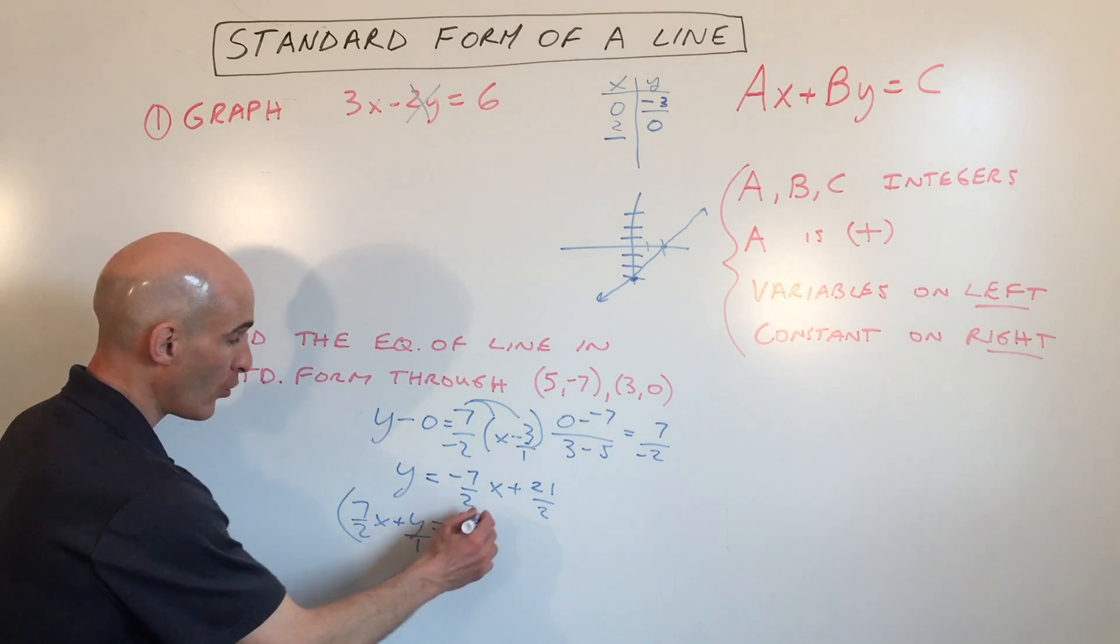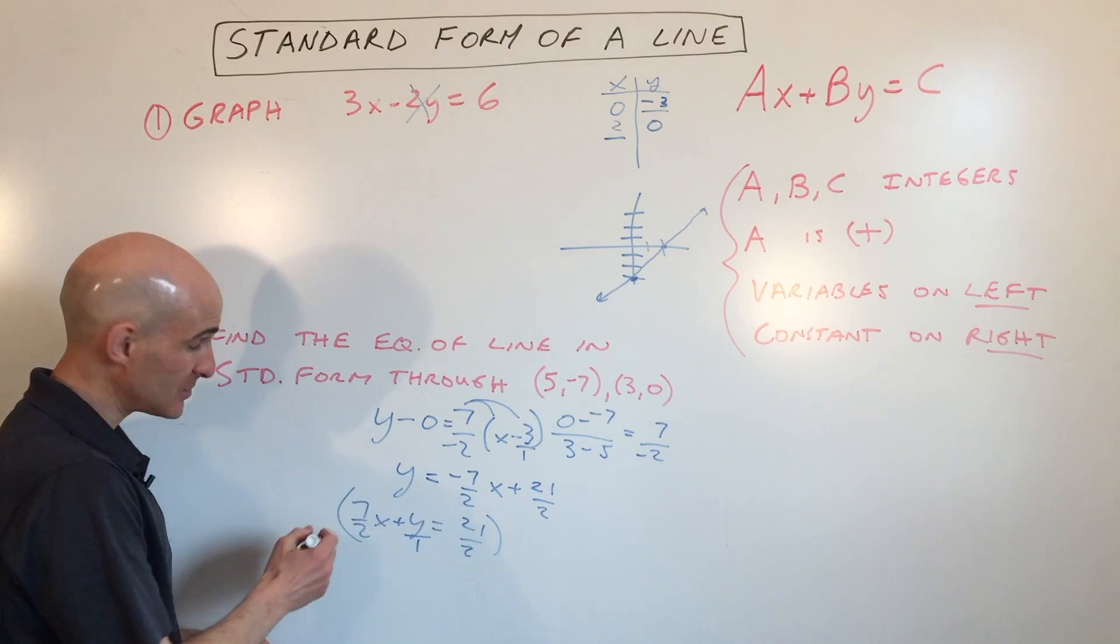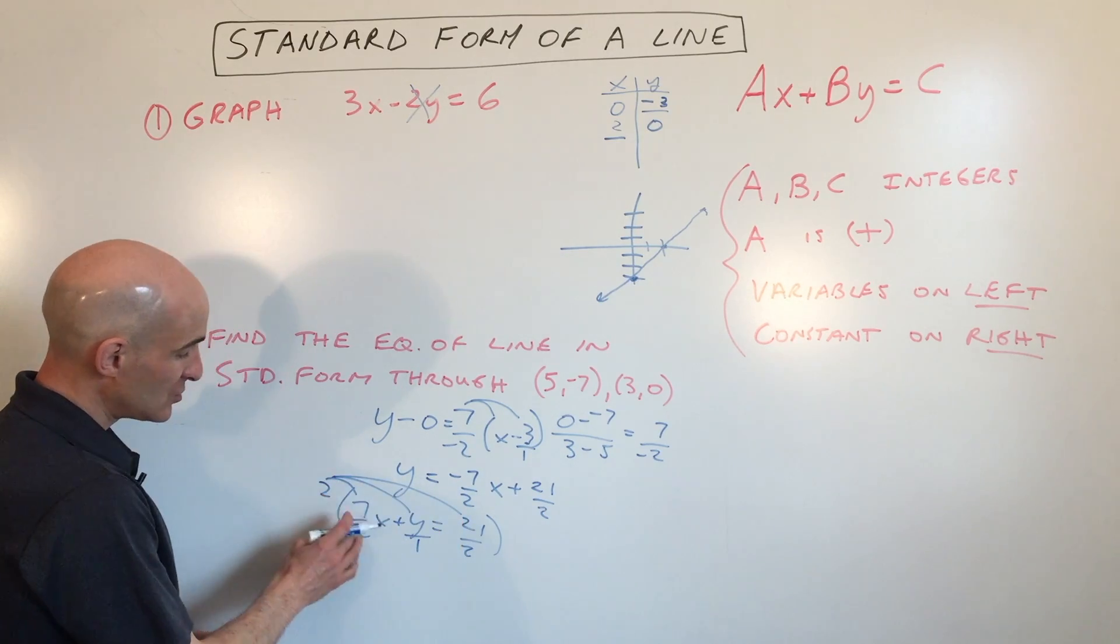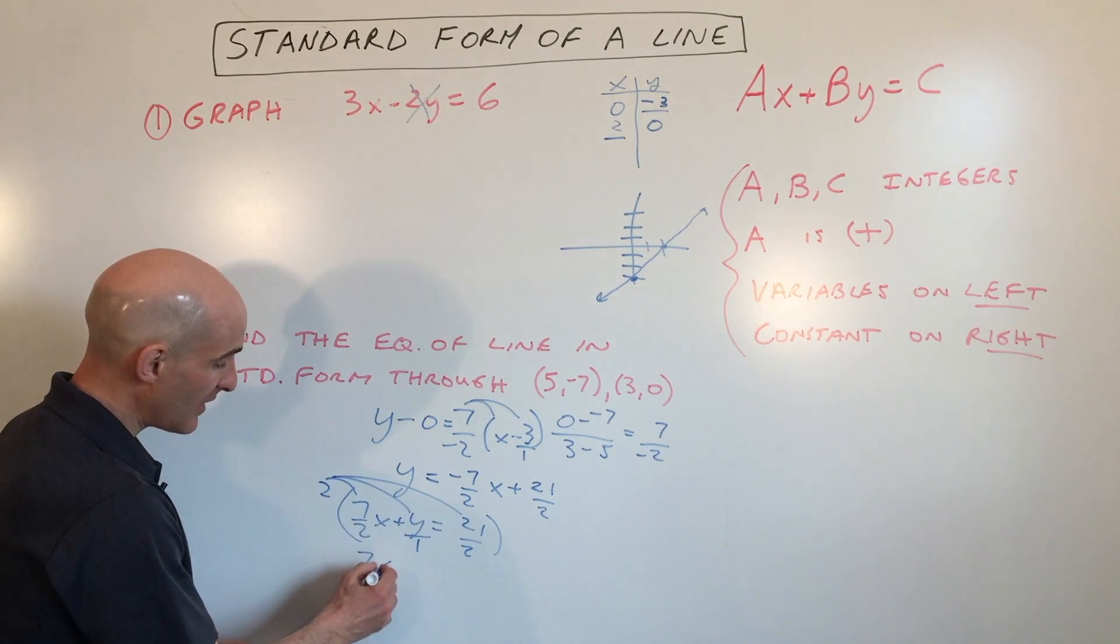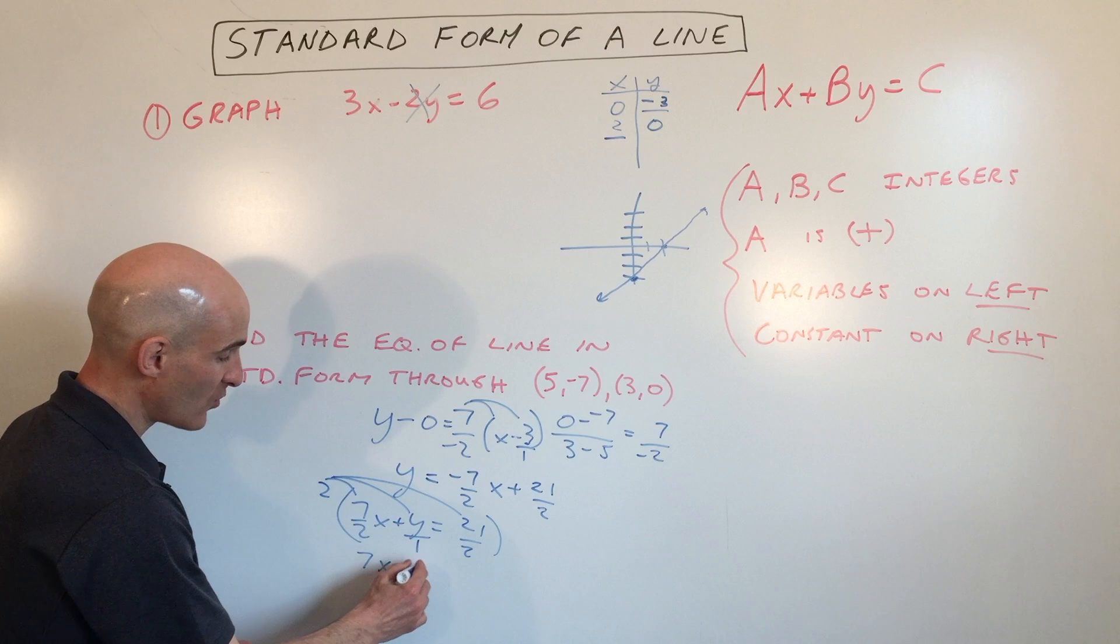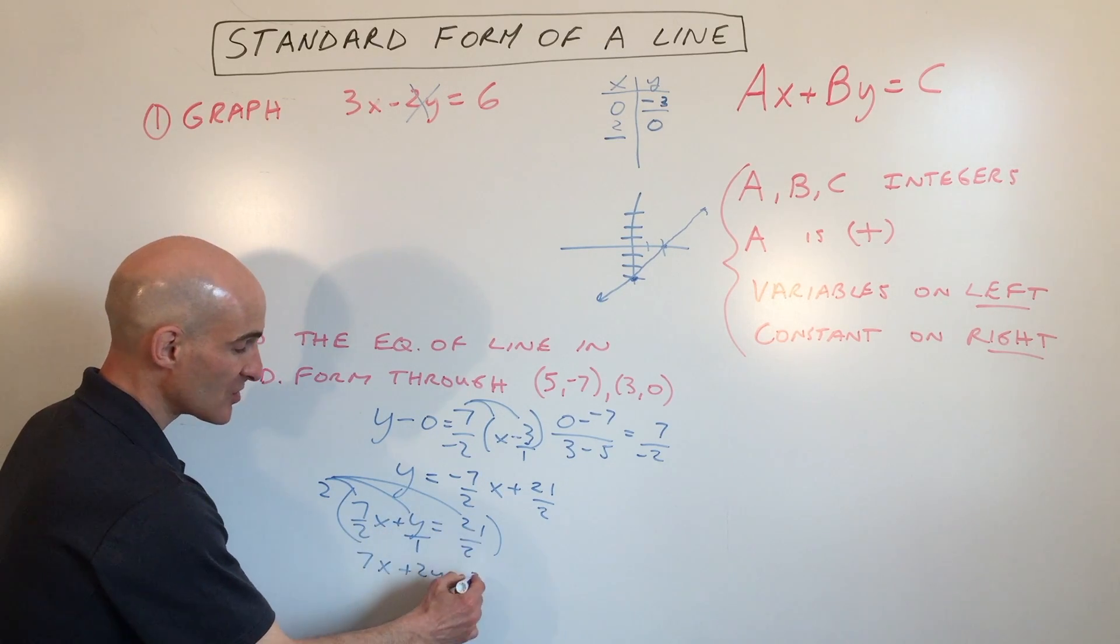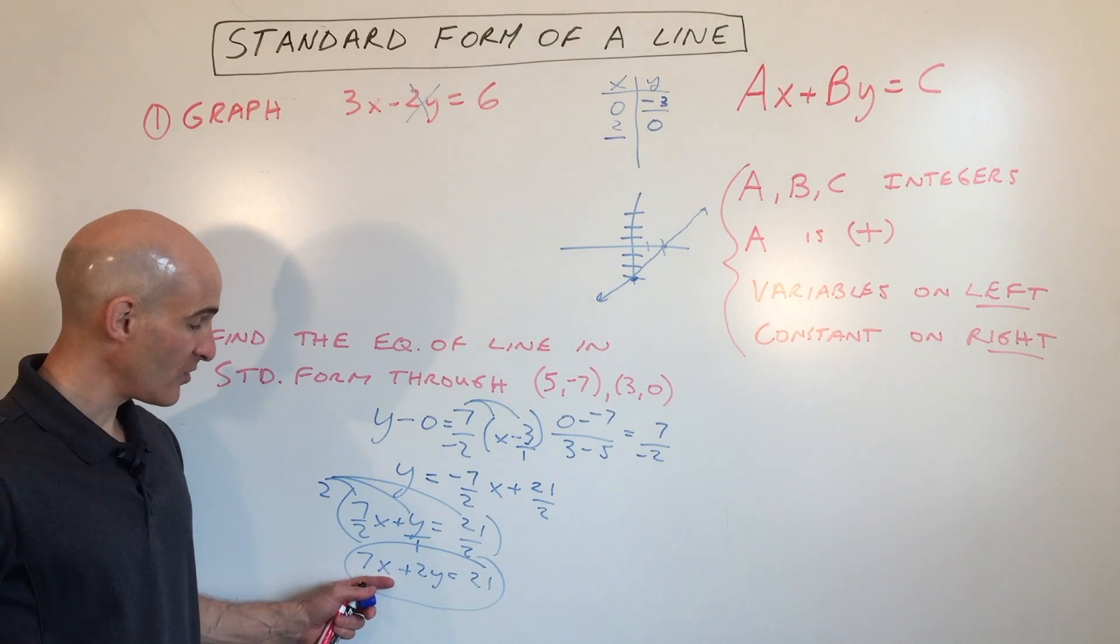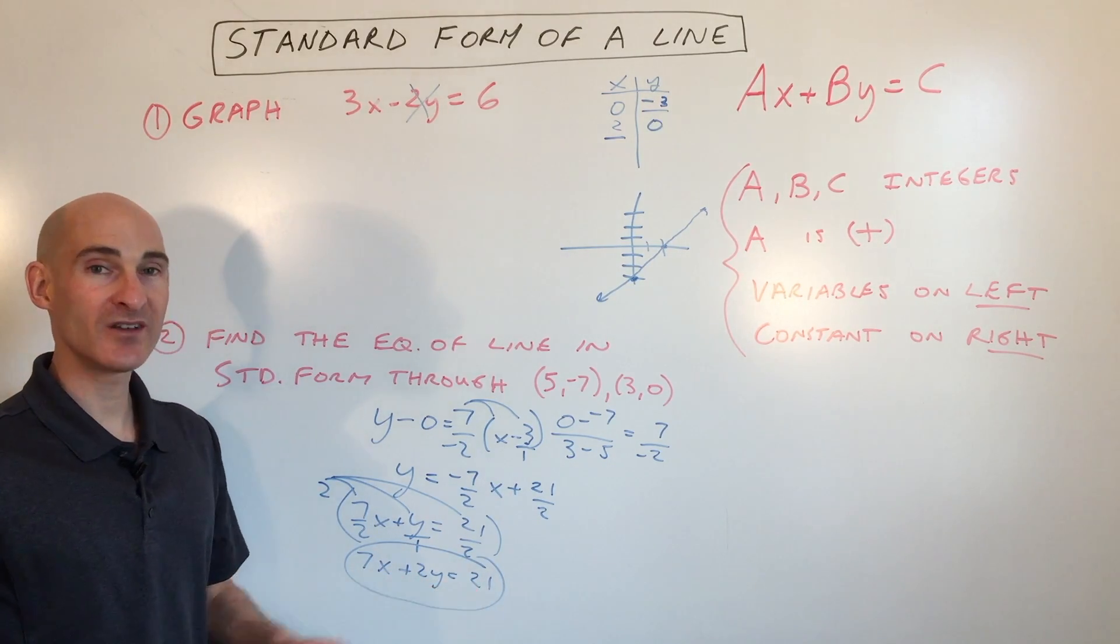So I'm going to multiply the whole equation—left and right sides, every term—by 2. So if I do that, these 2's are going to cancel, so you get 7x. This is going to be 2 times y. And this is going to be 21—the 2's cancel. So that's our standard form of the equation of a line: 7x plus 2y equals 21. And you've got it.